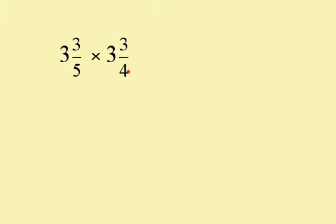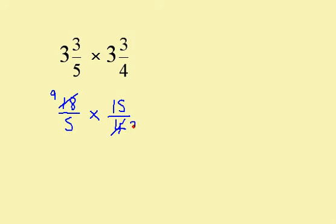For this one, I need to change them to top-heavy fractions before I begin. 3 times 5 is 15; add that to the 3 gives me 18, so it's 18 over 5. 3 times 4 is 12; add that to the top is 15 over 4. I can now cancel any top number with any bottom number. 2 goes into 18 nine times, and 2 goes into 4 twice. 5 goes into 5 once, and 5 goes into 15 three times. Now I can multiply: 9 times 3 is 27, and 1 times 2 is 2. This is top-heavy, so I need to change it to a mixed number. 2 into 27 goes 13 times with a remainder of 1, so we have 13 and a half.